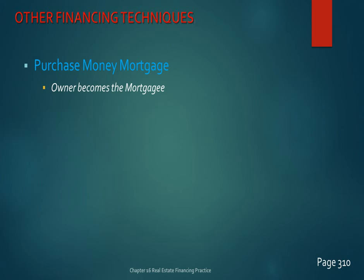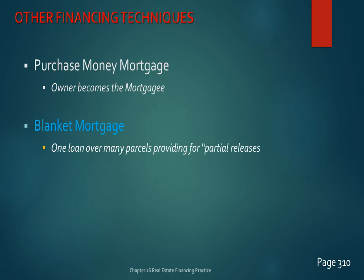A blanket mortgage covers more than one parcel and provides for partial releases — this is a mortgage developers might use. They get one master mortgage over all 200 lots of their subdivision. Every time someone purchases a lot, the developer pays down part of the loan and the lender releases the lien just on that specific parcel being purchased.